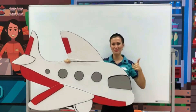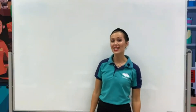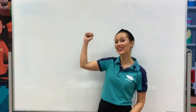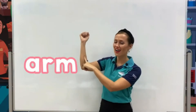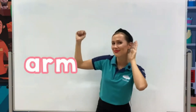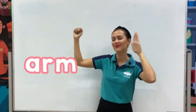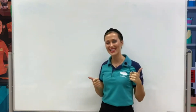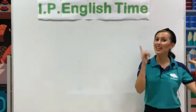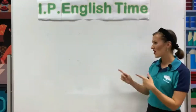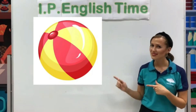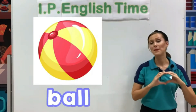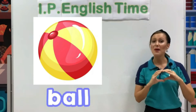Yes, good job! And letter A is for Arm! Can you repeat after me? A, A, Arm. Yes, well done, kids! Letter B is for Ball. B, B, Ball.